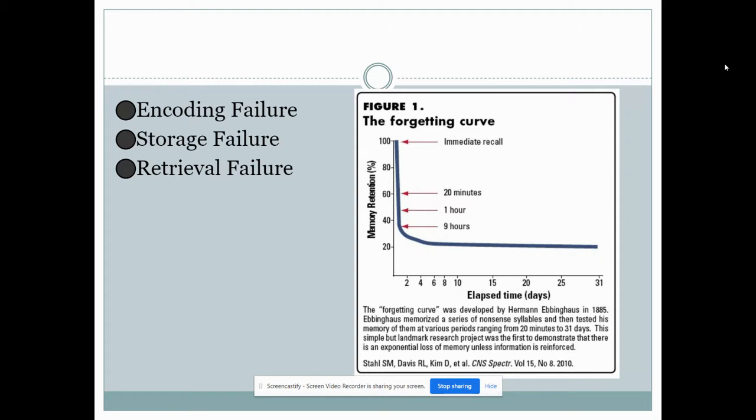A failure in the storage stage of memory is when someone tries to cram too much information in their brain. What you see here is a picture of the famous forgetting curve developed by Hermann Ebbinghaus. What he did is he had his participants memorize a series of syllables and then tested the memory of them at various periods ranging from 20 minutes to 30 days. What he found is that within nine hours close to 65 percent of all the information was lost because the participants didn't have time or didn't have the ability to process all of that information. So therefore not all of it made it into their long-term memory.